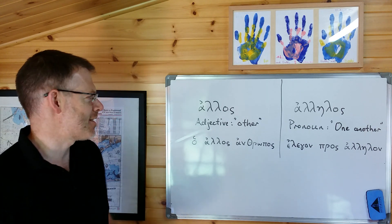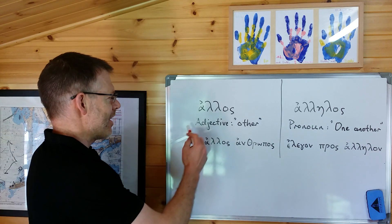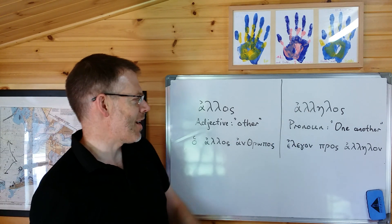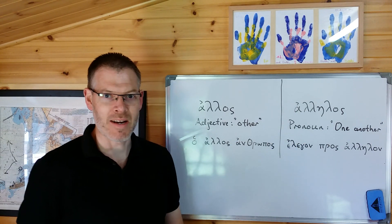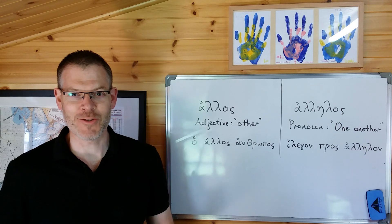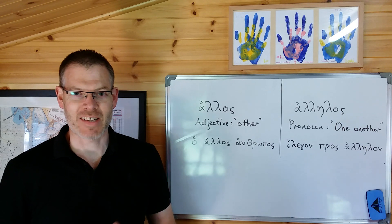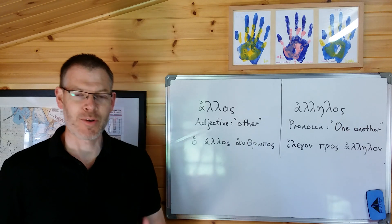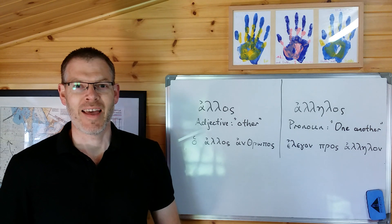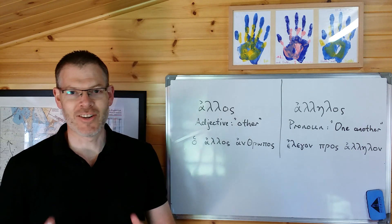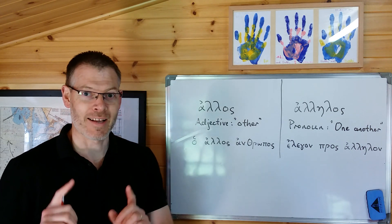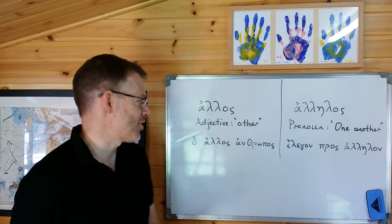We're looking at two words: alos, an adjective meaning 'other,' and alelos, a pronoun meaning 'one another.' Now for some reason people get these confused, a bit of a tangle — they worry about which is a pronoun, which is the adjective, and get tangled up in all the grammatical stuff. It's really not that difficult — just think about it like I'm about to show you.